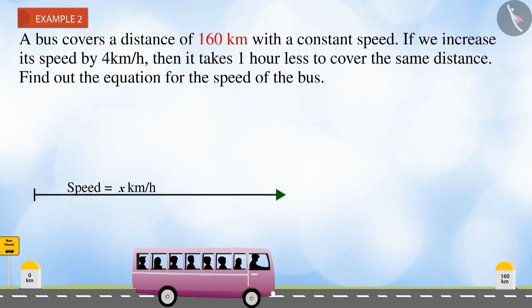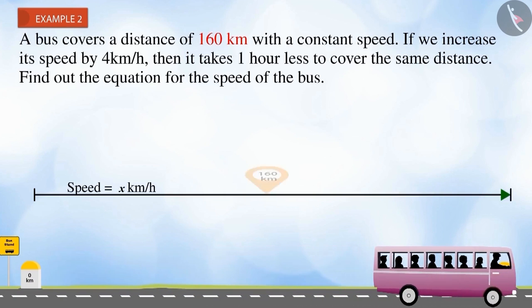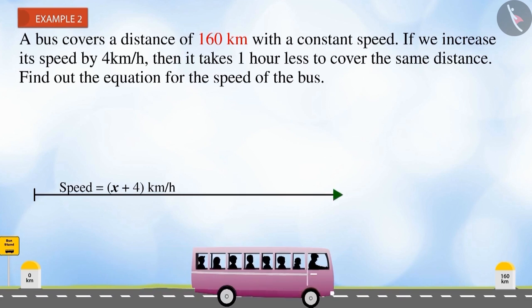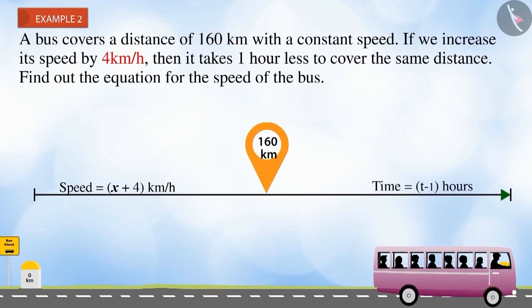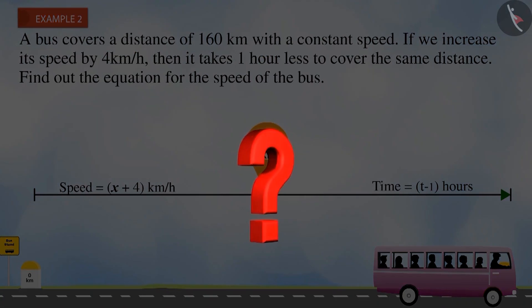A bus completes 160 kilometers with a constant speed. If we increase its speed by 4 kilometers per hour, then the bus takes one less hour to complete the journey. In this case, find the equation to determine the speed of the bus.